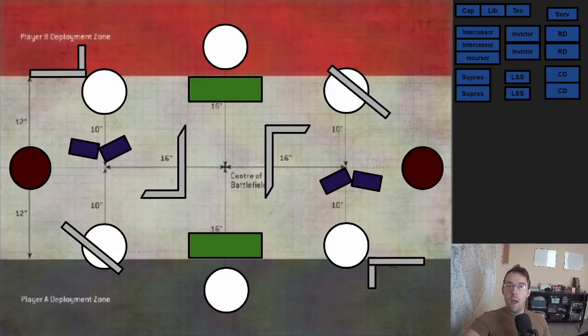Now if I showed you a list on the top right, how would you describe it to me? Many people might say oh that's John Lennon's ultramarine list with intercessors, incursors, invictors, landspeeder storms, contemptor dreadnoughts, redemptor dreadnoughts. But Warhammer 40k is so complicated and there are so many different types of armies, units, warlord traits, and stratagems that it's too much for one person to truly be able to take all in.